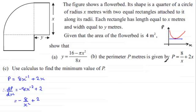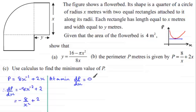We know that the gradient at this minimum point is going to be 0. So at a minimum, the gradient dp by dx will equal 0. And so therefore all we need to do is put this equation: minus 8 over x squared plus 2 equals 0. And you can solve this in many ways, but it's a good idea to get rid of the fraction first of all.